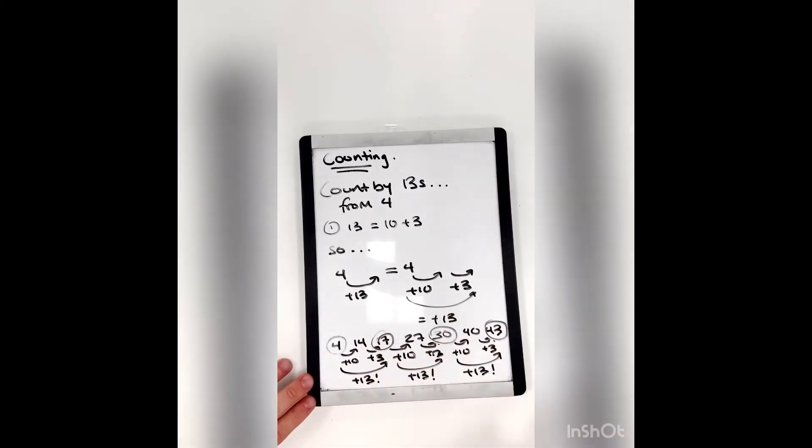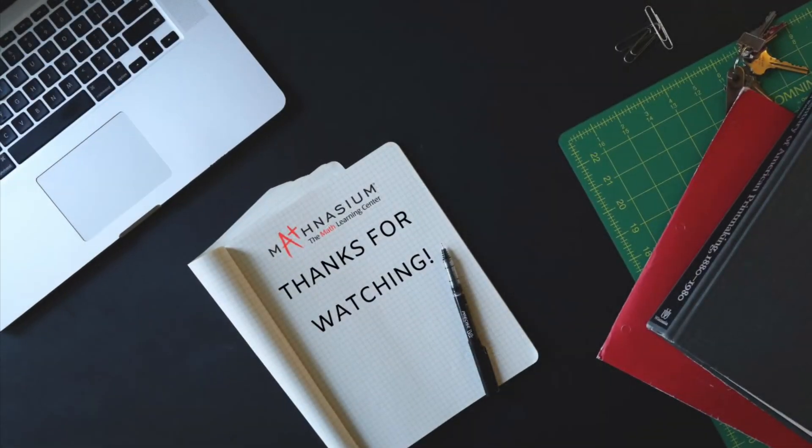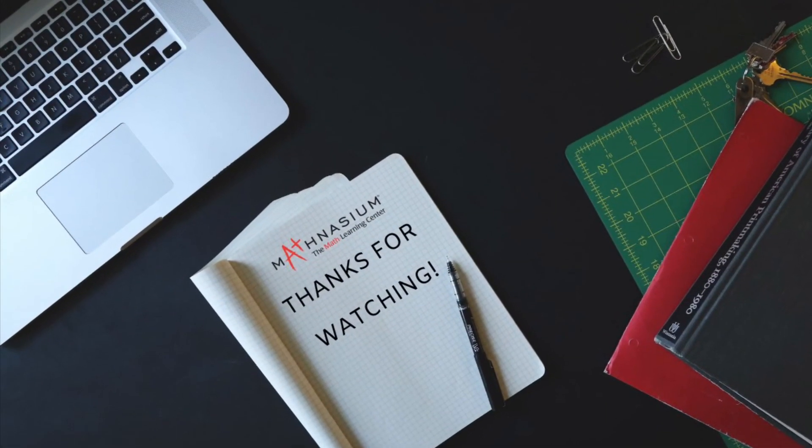So counting by thirteens, we go four, seventeen, thirty, forty-three. And that's how we can count by bigger numbers than ten.